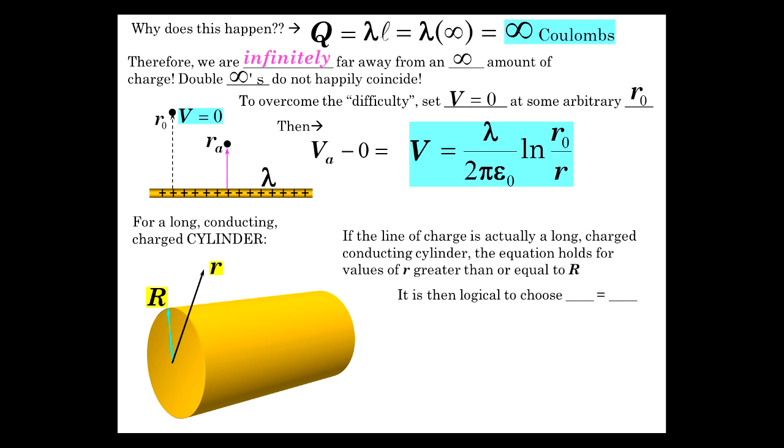So here's little r. So what's the potential way out there? It's going to be this equation as long as this is beyond the extent of the cylinder diameter. Then it's logical to make the choice of R zero for this thing. I'll bet you could guess. I wonder what it would be. That's right, it's just big R. Let's choose R zero equal to big R. And then the equation becomes, there it is, lambda over 2π epsilon zero, natural log of the radius of the cylinder over the position, the radial position in question.